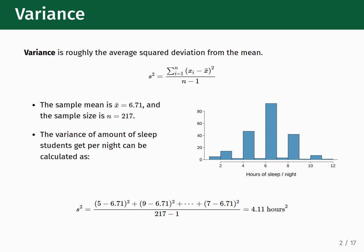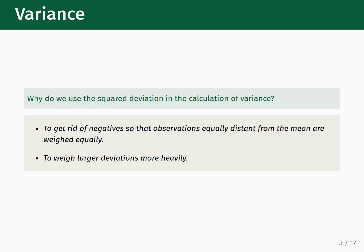You might wonder why we're using the squared deviation in the calculation of the variance. Here are a couple of reasons why you would want to compute the spread of the data in this particular way. First, by squaring all of the differences, we get rid of the negative signs so that observations that are equally distant from the mean are weighed equally. Frequently, we will not need to distinguish the data spread above the mean versus the spread below the mean. Second, squaring the differences means that we place more weight on larger deviations. Put another way, the variance is sensitive to outlier values.